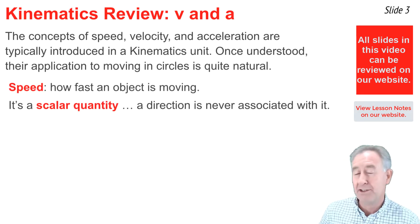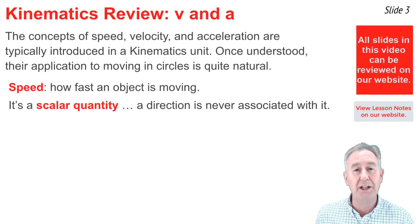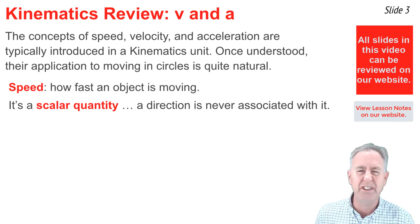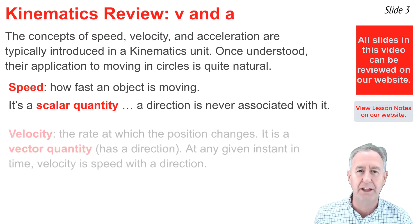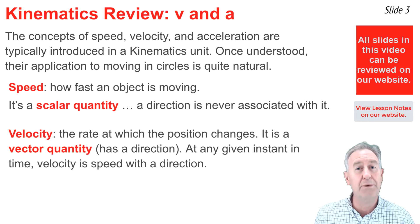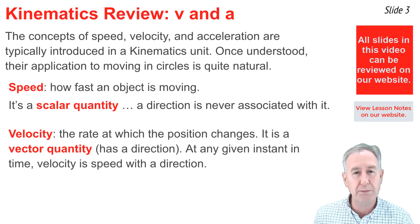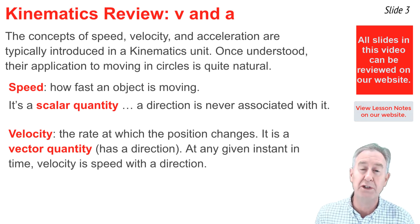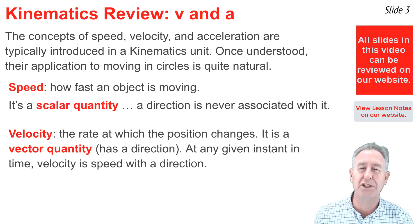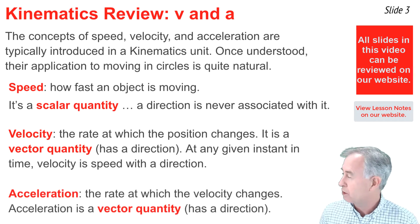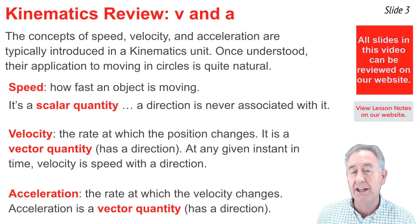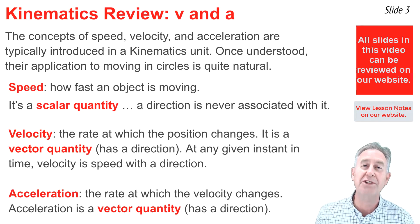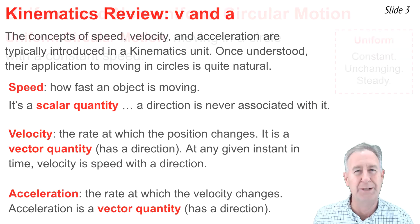Speed refers to how fast an object is moving. It's a scalar quantity, meaning it's described by a magnitude, but you'll never find a direction associated with it. Velocity refers to the rate at which an object changes its position. Unlike speed, velocity is a vector quantity, and at any given instant in time, the velocity of an object is the speed value plus the direction the object is moving. Acceleration is the rate at which an object changes its velocity. Like velocity, acceleration is a vector quantity — it has a direction associated with it.